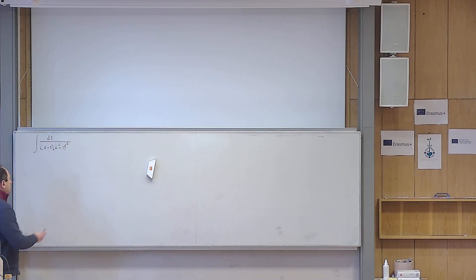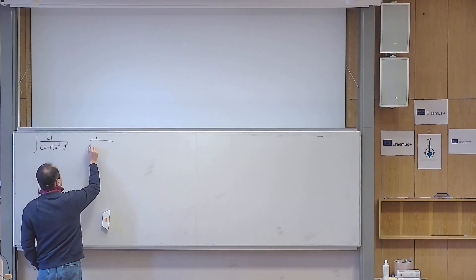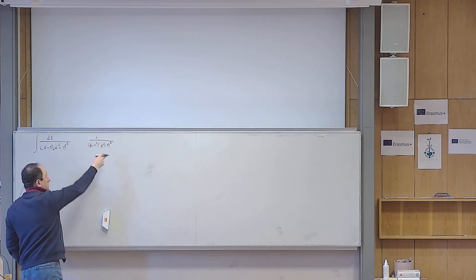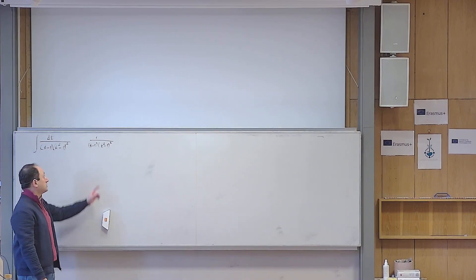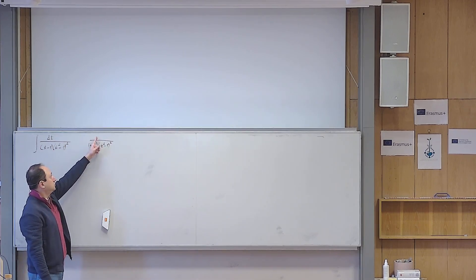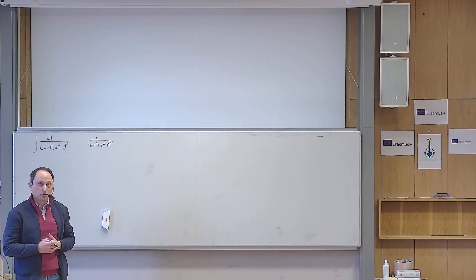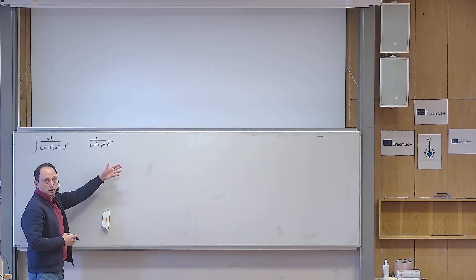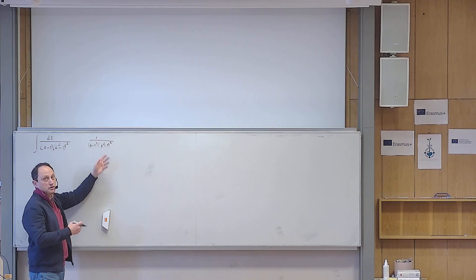So let us solve the problem now. The function here as the integrand is 1 over (t minus 1) times (t squared minus 1) squared. This is a rational function — a function whose numerator and denominator are both polynomials. In this case the numerator is a zero degree polynomial and the denominator is a fifth degree polynomial. Since the degree of the numerator is less than the degree of the denominator, everything is ready to use the method of partial fractions. But first I have to factorize the denominator, and in this problem the denominator is already written as a product.